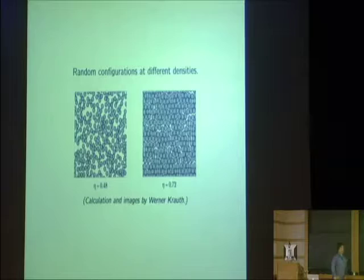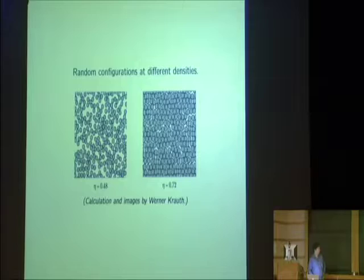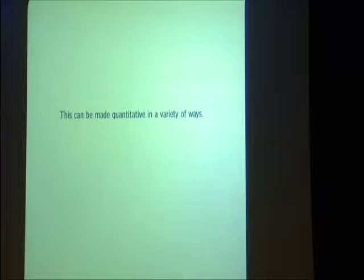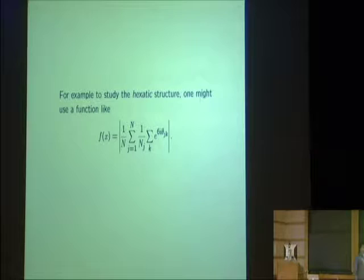They're not just eyeballing it in their experiments — they can make this quantitative. One version would be to look at the hexatic structure, which means looking at local angles and seeing how close they are to equally spaced.